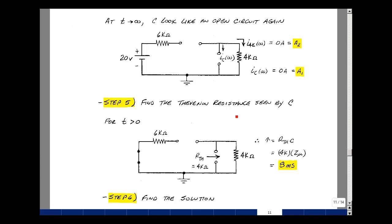Step five is to find the Thevenin resistance seen by the capacitance. This is for t after the switch changes. Still have an open circuit. Set all the independent sources equal to zero, and look back from the capacitor and see what you see. This is disconnected, so it doesn't have any effect, and all we see is the 4k resistor. Our time constant is 4k times 2 microfarads. We get 8 milliseconds.